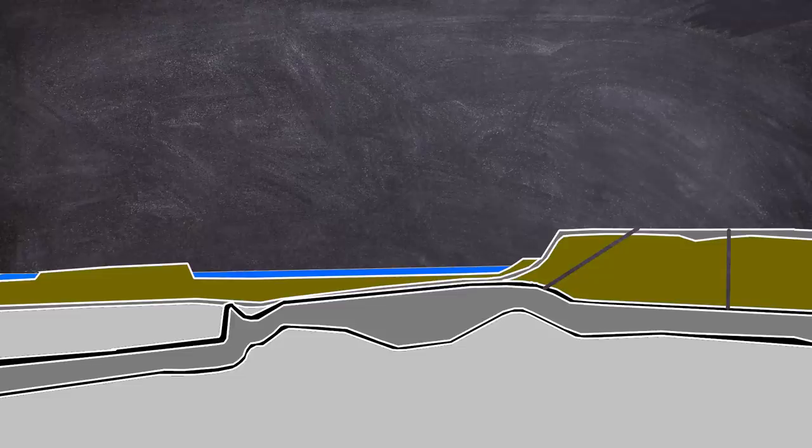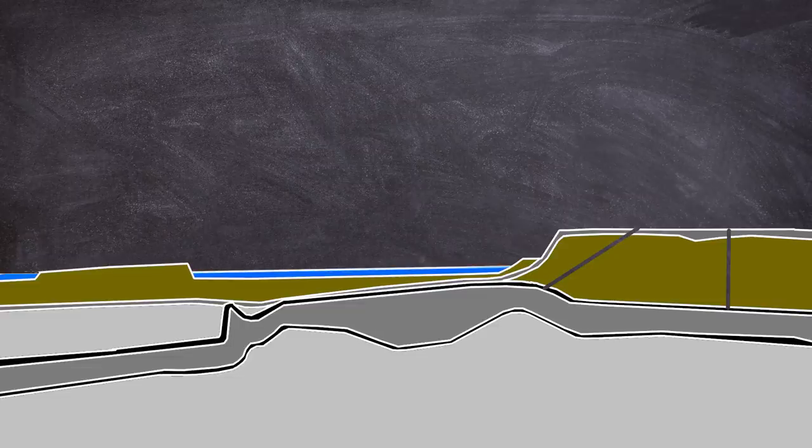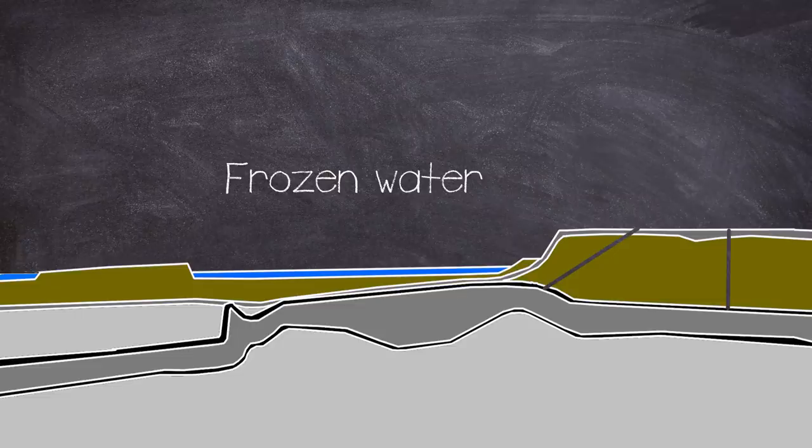There was another main factor for the failure and that was the water itself. Due to the time of year the Susquehanna river was partially frozen over which contributed to an increased water level. The higher level increased the weight on the already weakened riverbed.